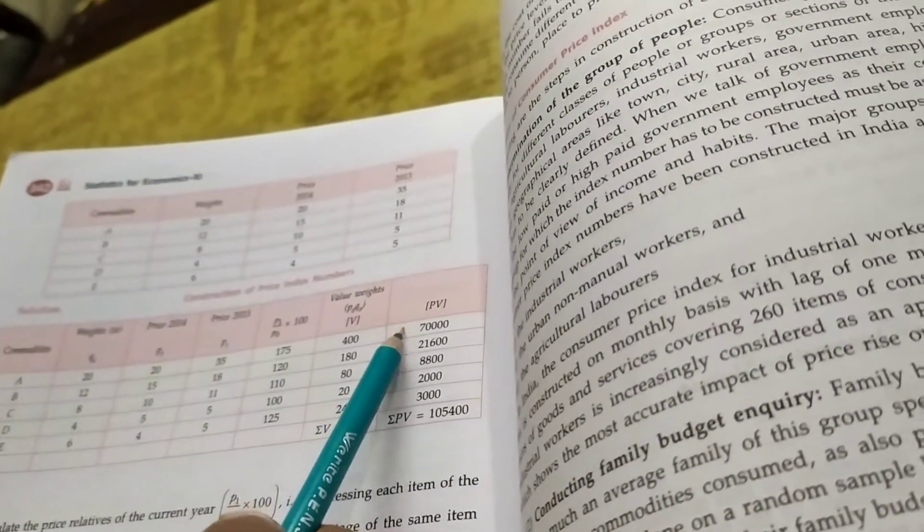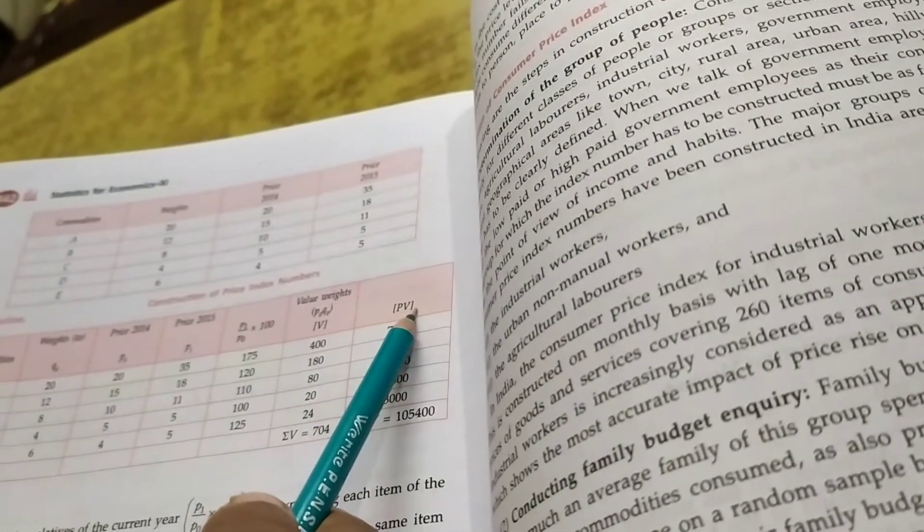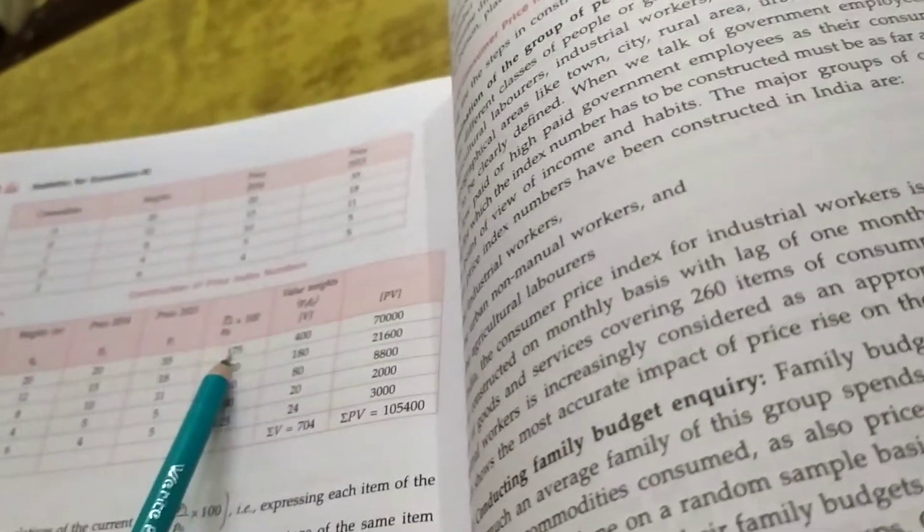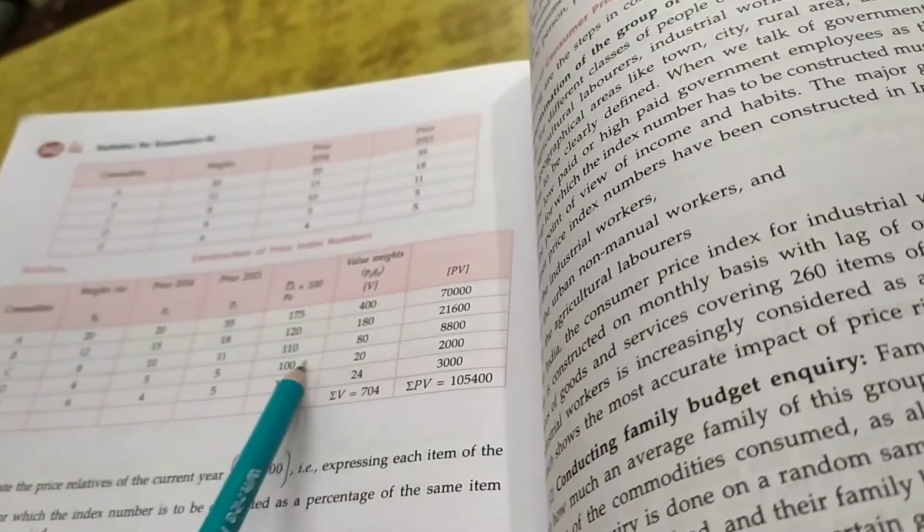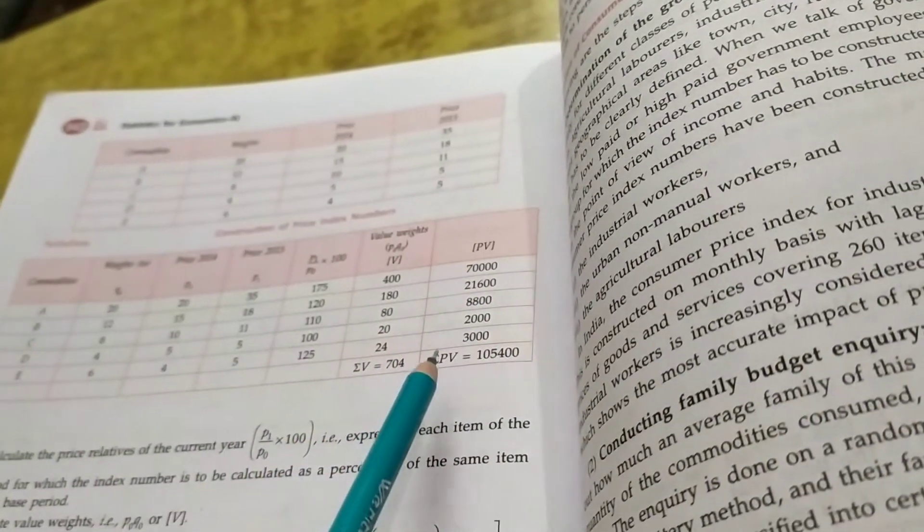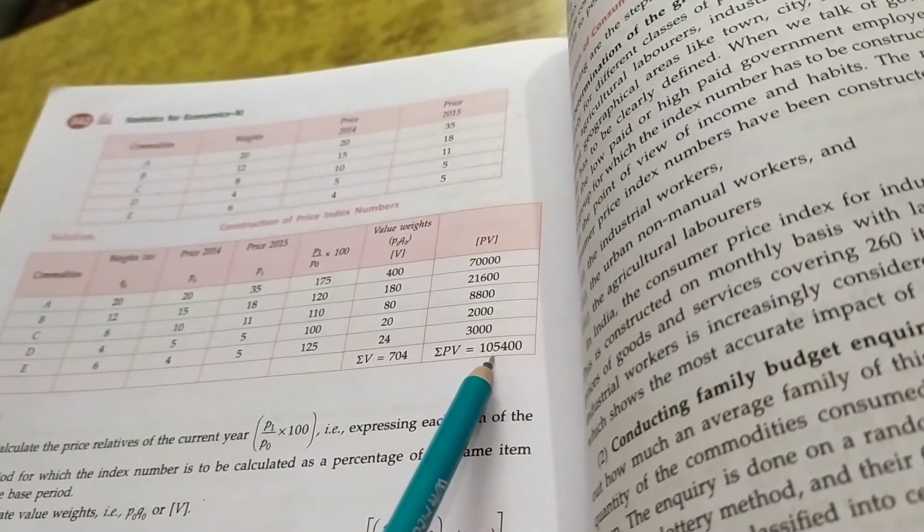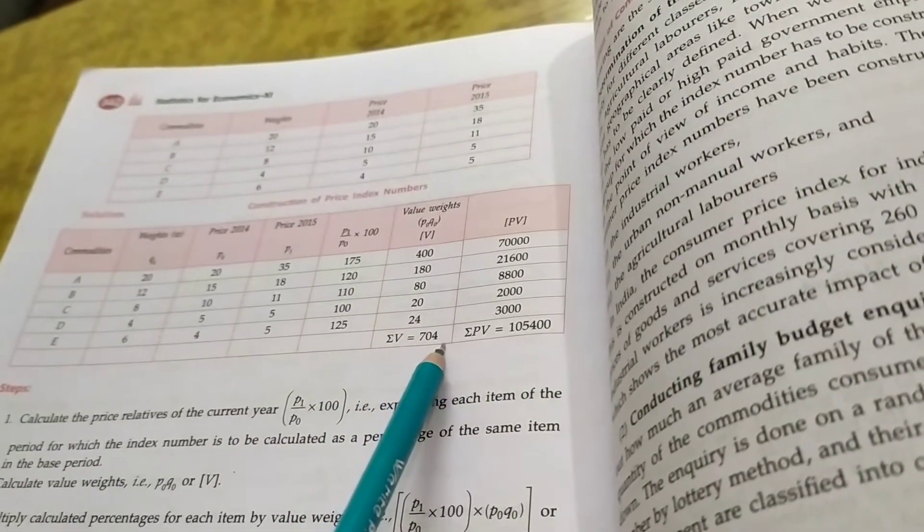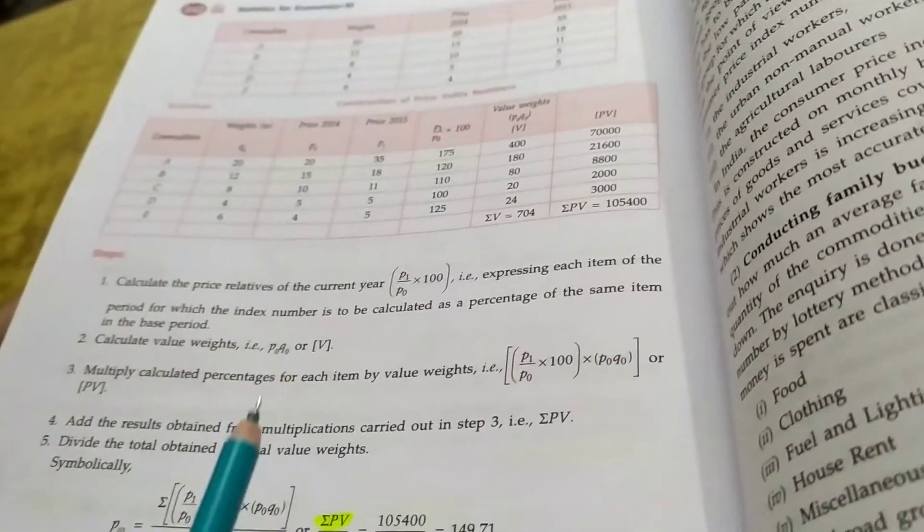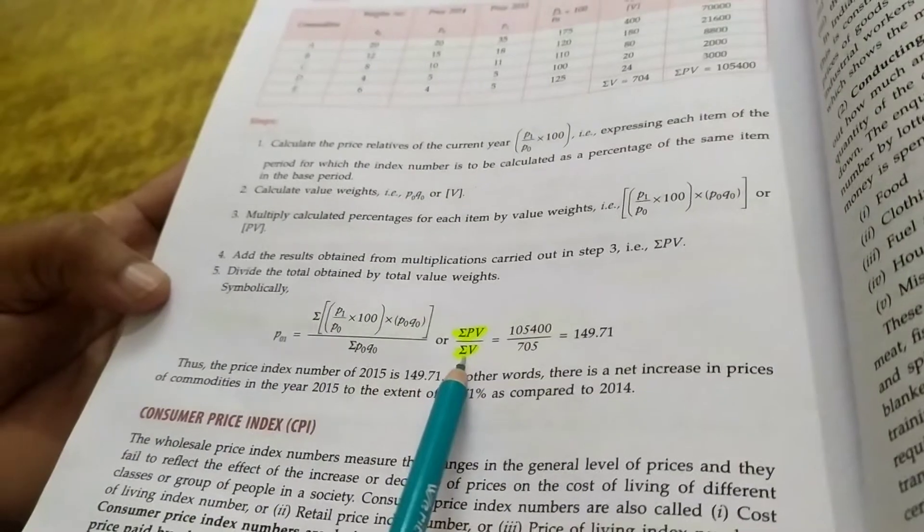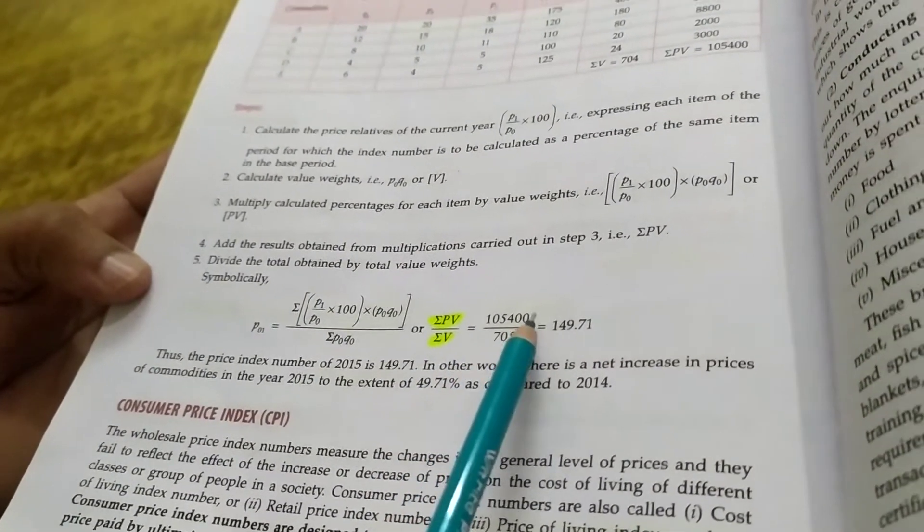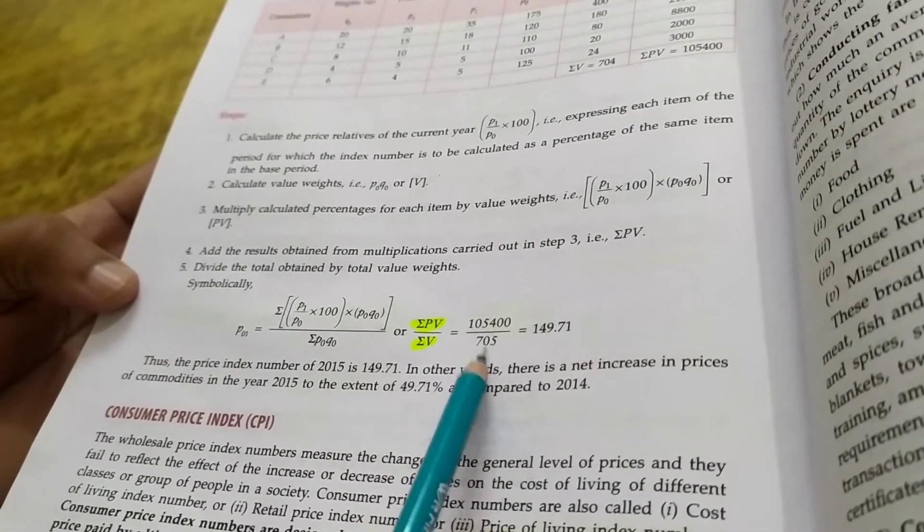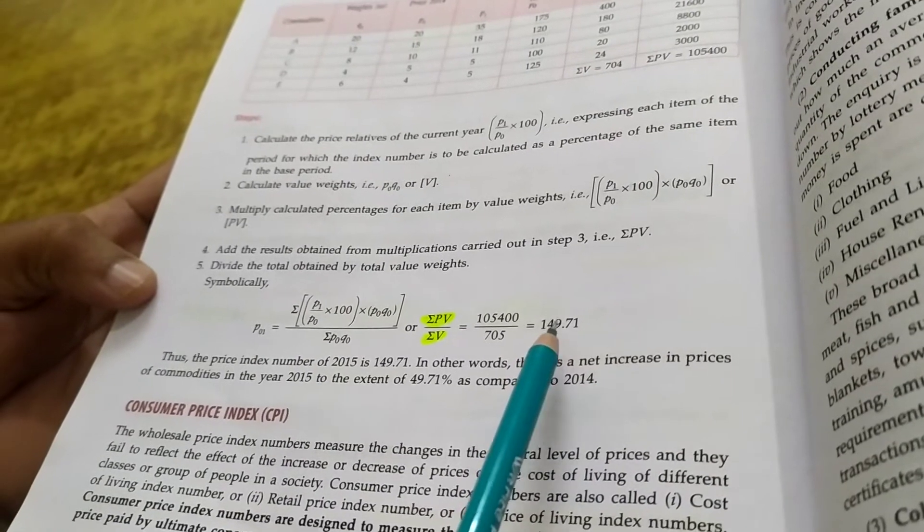In this way we will get the value of V. Then we calculate PV, and applying the formula we get the final value of P01. The value is 149.71.